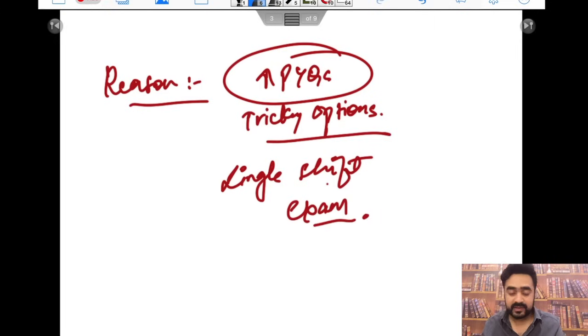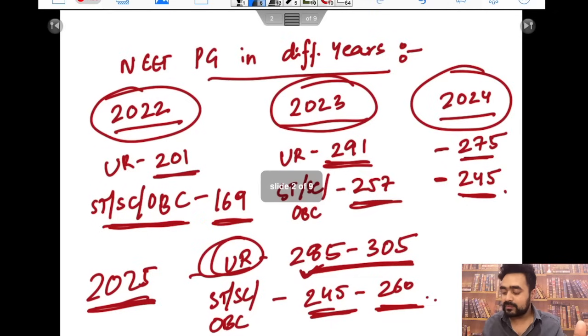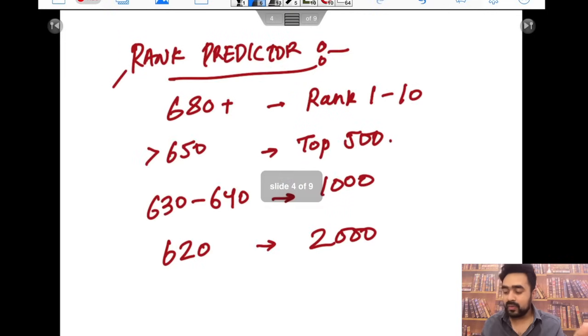It will be around 285 to 300. It was 291 in 2023 also, so somewhere there only. Now rank predictor - there were people asking if I'm getting this much marks, how much rank can I expect? So for 680 plus you can expect a rank around first rank to top 10. You can be in top 10 if you are scoring more than 650. You can expect a rank of 500.